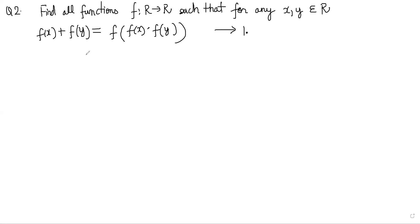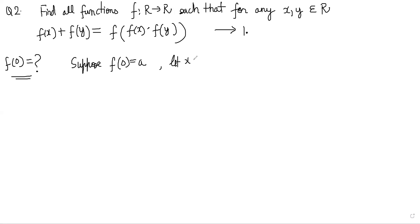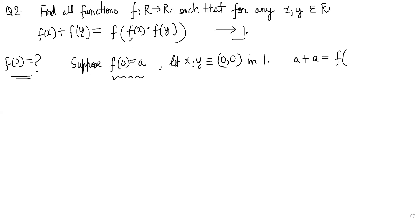In this problem, we first try to find f(0). Suppose f(0) = a. Let's put x = 0 and y = 0 in equation 1. We get f(0) + f(0) = f(f(0)·f(0)), which is a + a = f(a·a) = f(a²). So we get f(a²) = 2a as our second result.